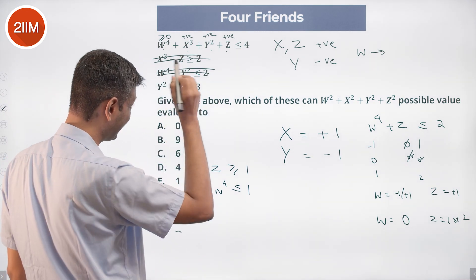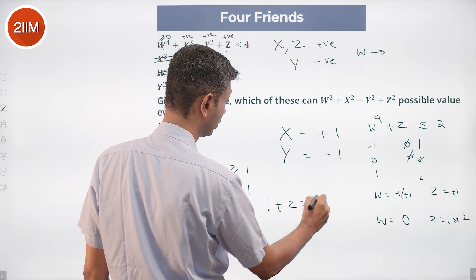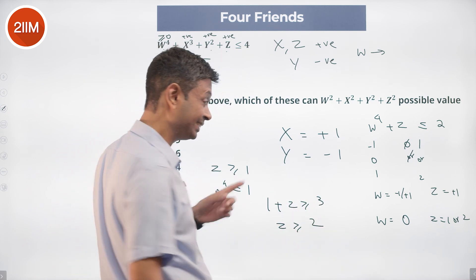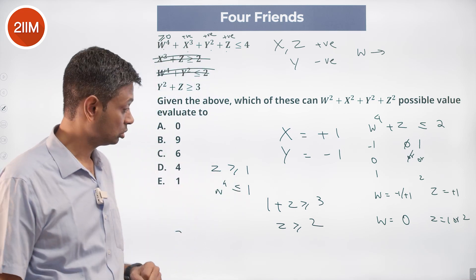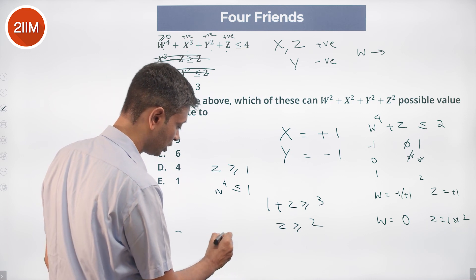We know Y² + Z ≥ 3. Y² is 1, so 1 + Z ≥ 3. Z ≥ 2. Z cannot be 1. Z has to be 2. That means Z is equal to 2.